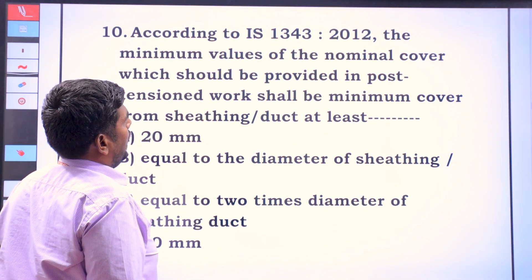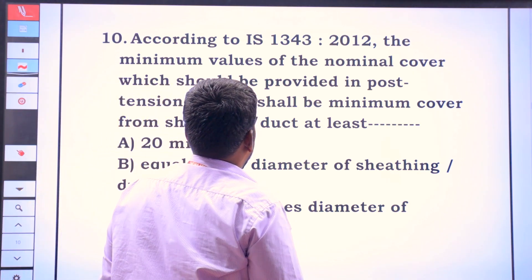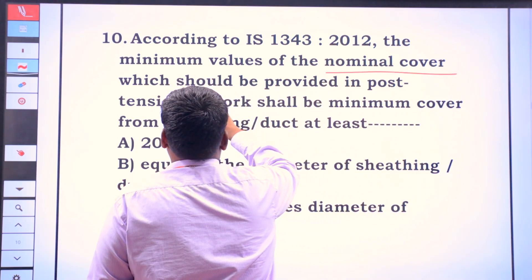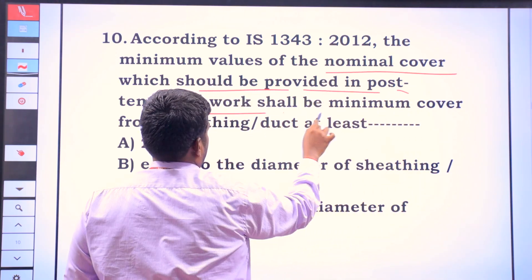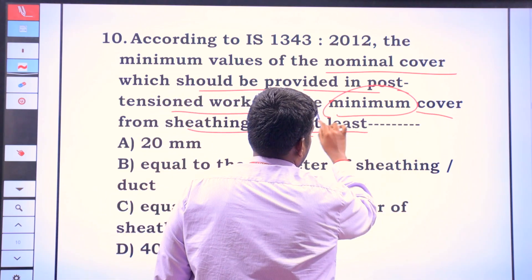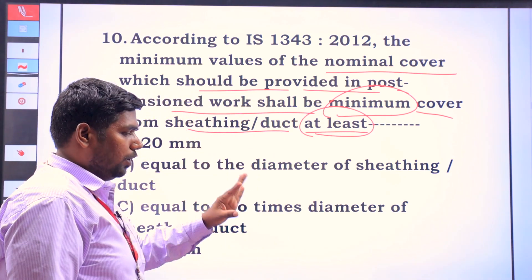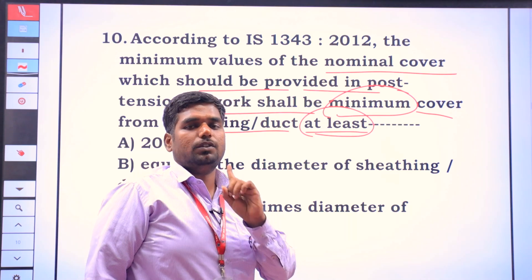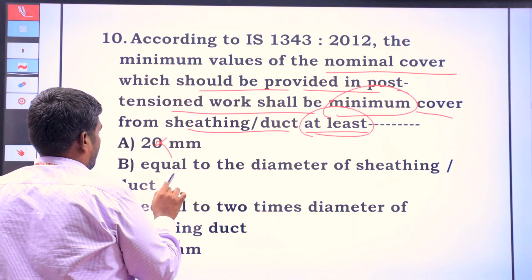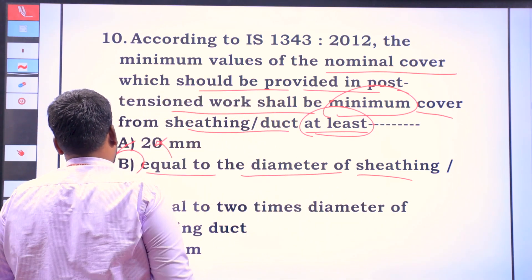According to IS 1343, 2012, the minimum value of the nominal cover should be provided in post-tensioned work. It shall be the minimum cover from the sheathing duct at least. The answer is 20 mm. So, the cover is equal to the diameter of the sheathing duct. The answer is B.